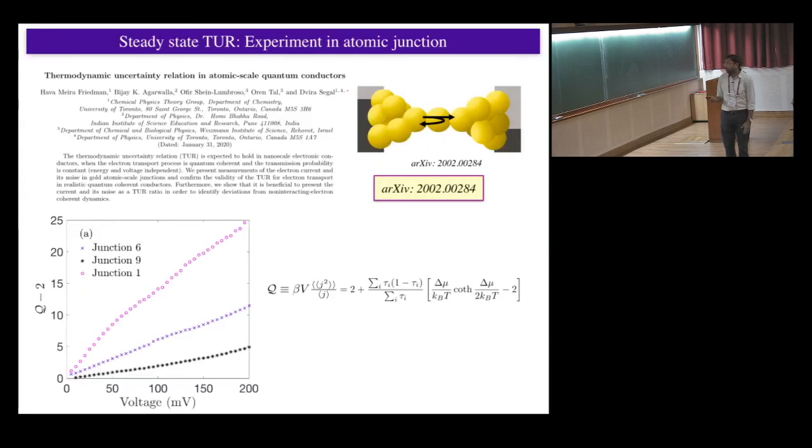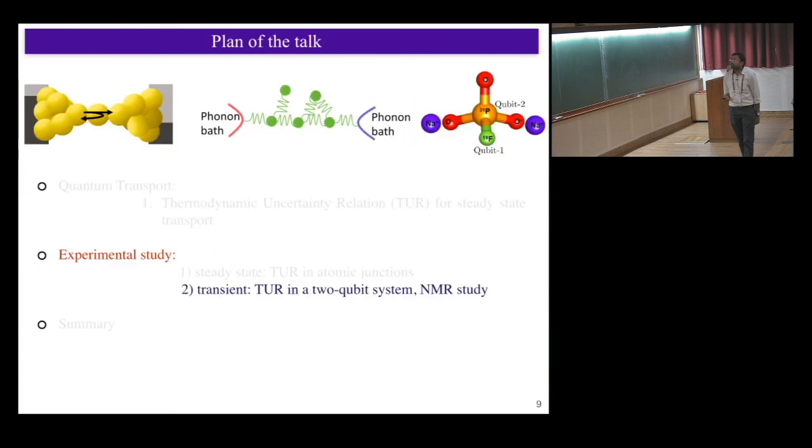So we recently did one experiment. Well, I contributed in the theoretical sense. This is the paper in collaboration with Weizmann University. They worked in a regime, unfortunately, where they couldn't see the violation. If you see this Q, which is the TUR minus two, they always see positive. So the regime where there is a violation, they couldn't capture that. But at least they see something which is positive. So in this regime of parameters, this turns out to be positive. So this is one regime of validity of this TUR.